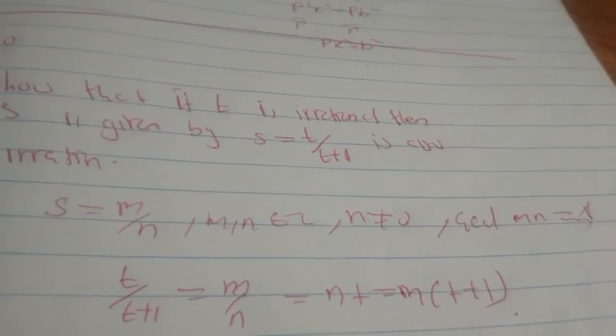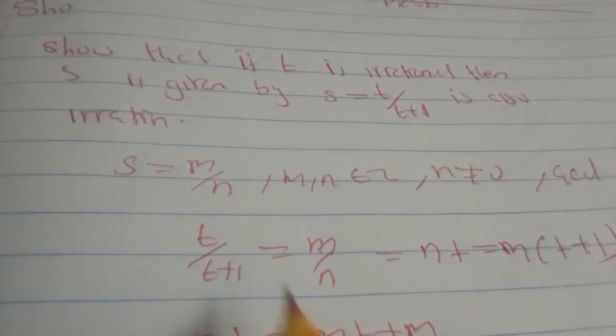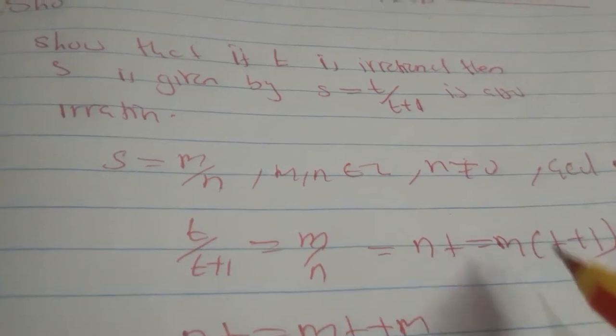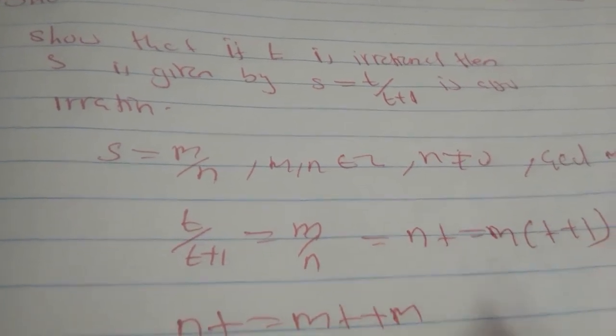The gcd of m and n is equal to one. So we can see t over t plus one is equal to m over n, which gives us nt is equal to m times the bracket t plus one, so nt is equal to mt plus m.